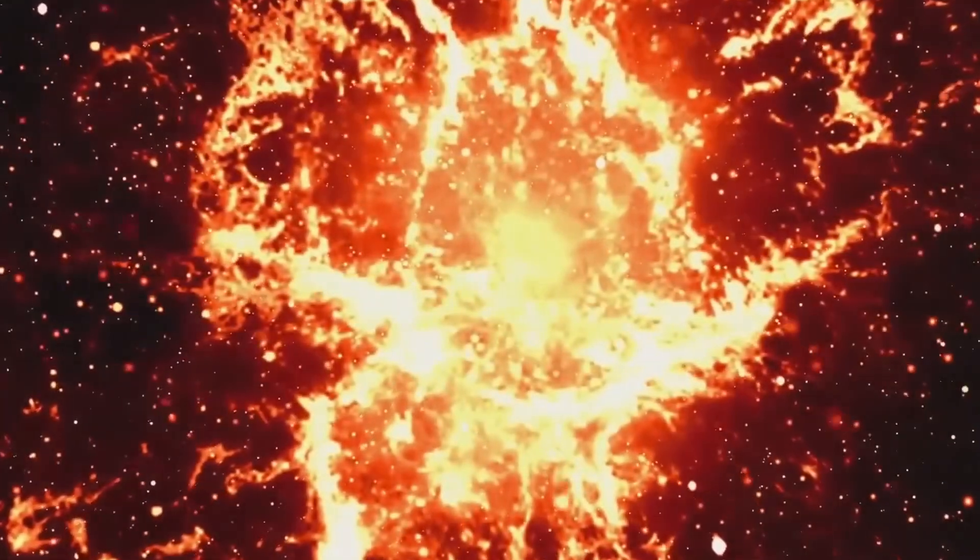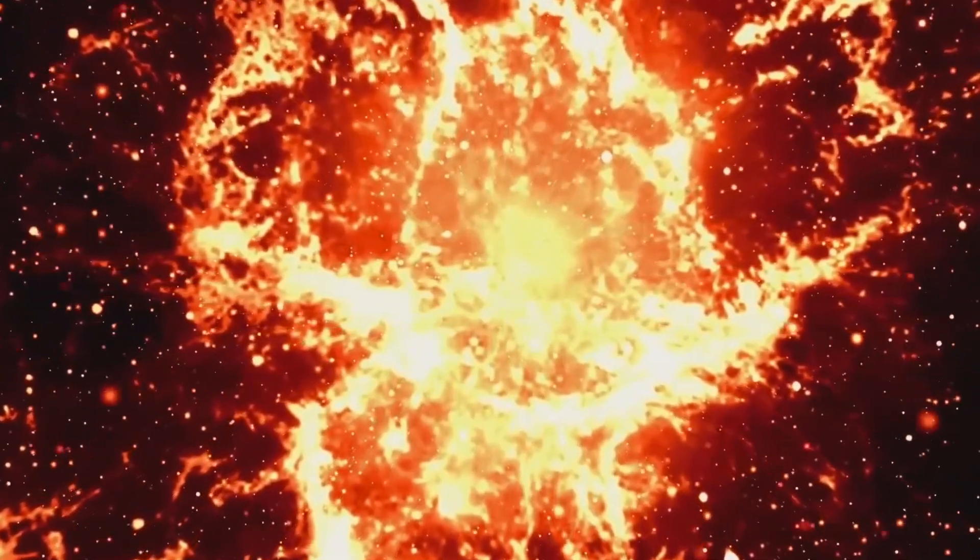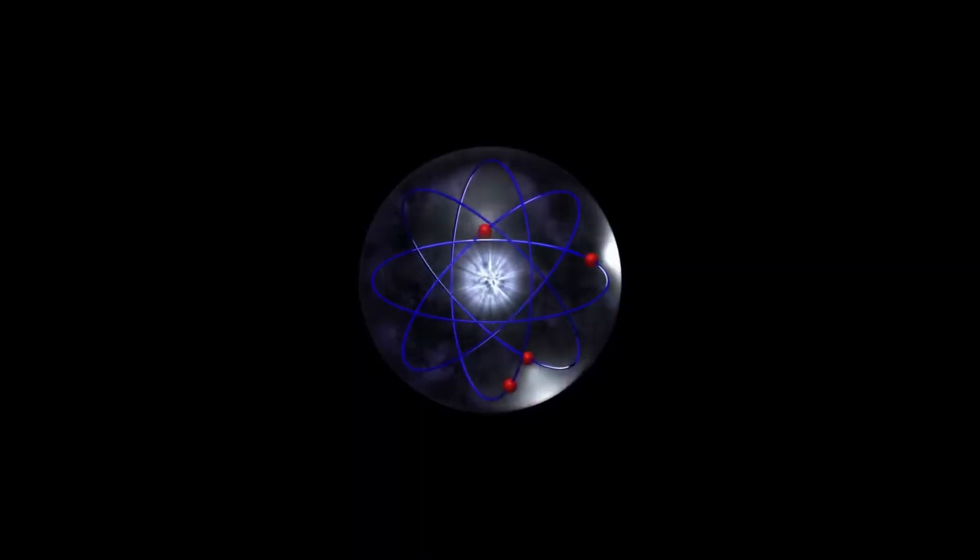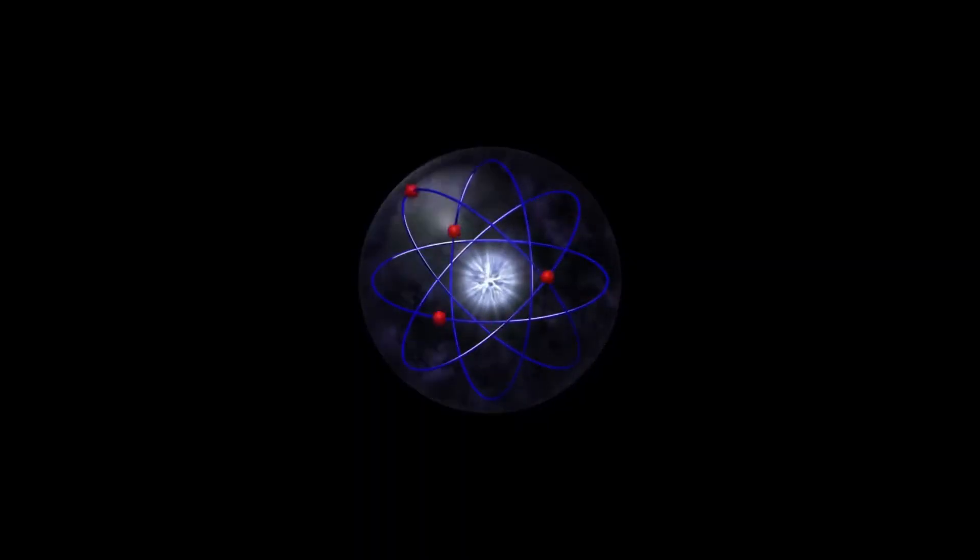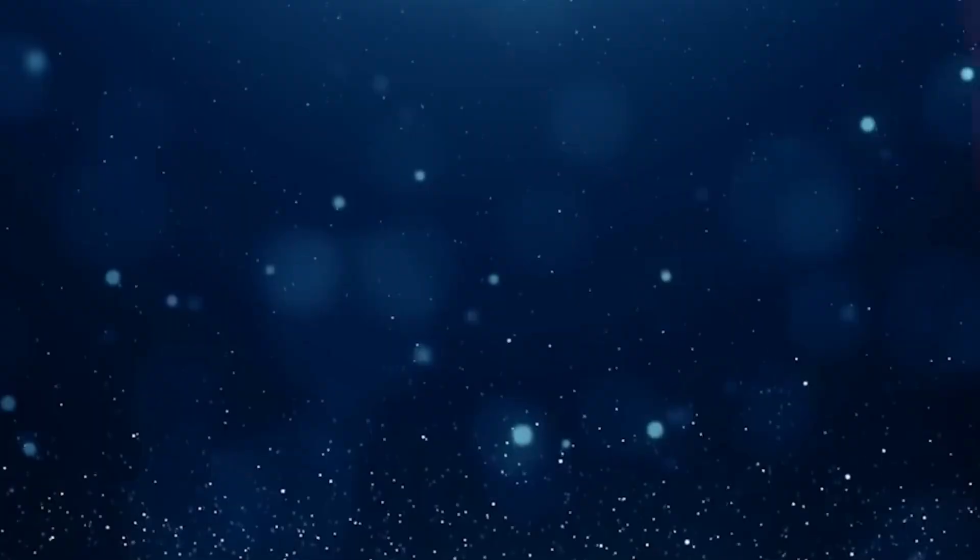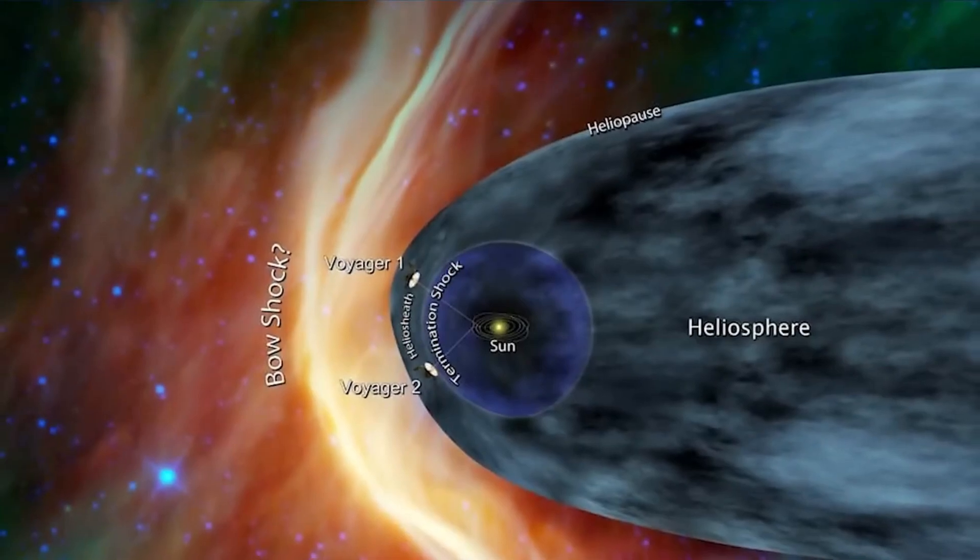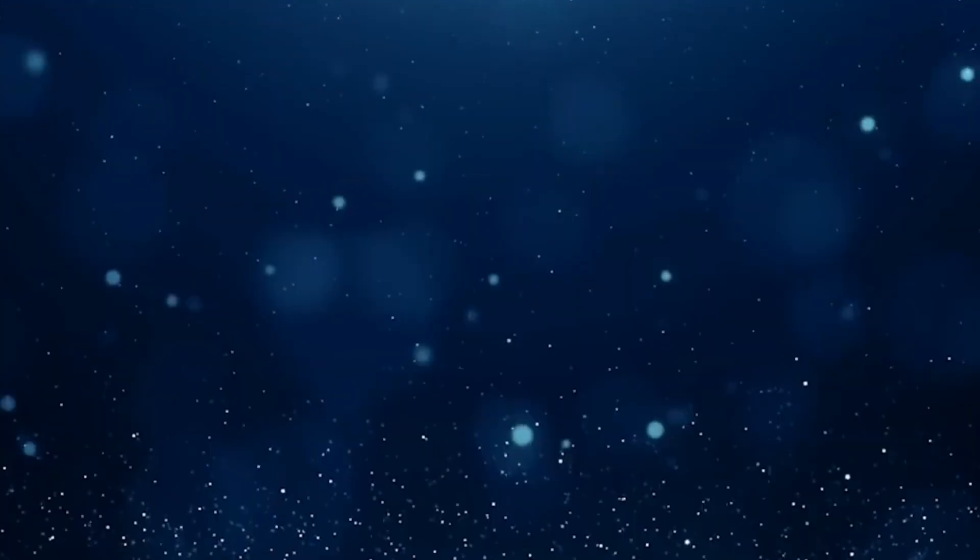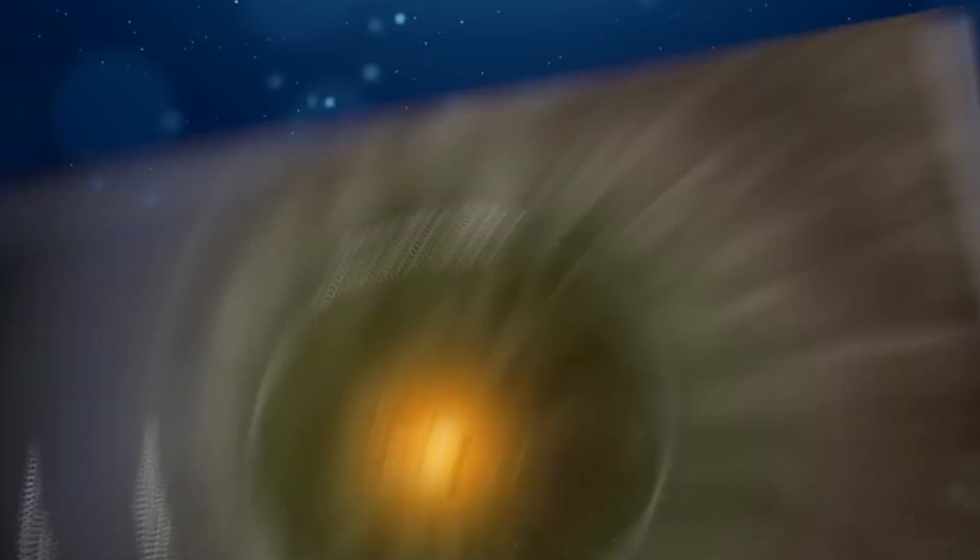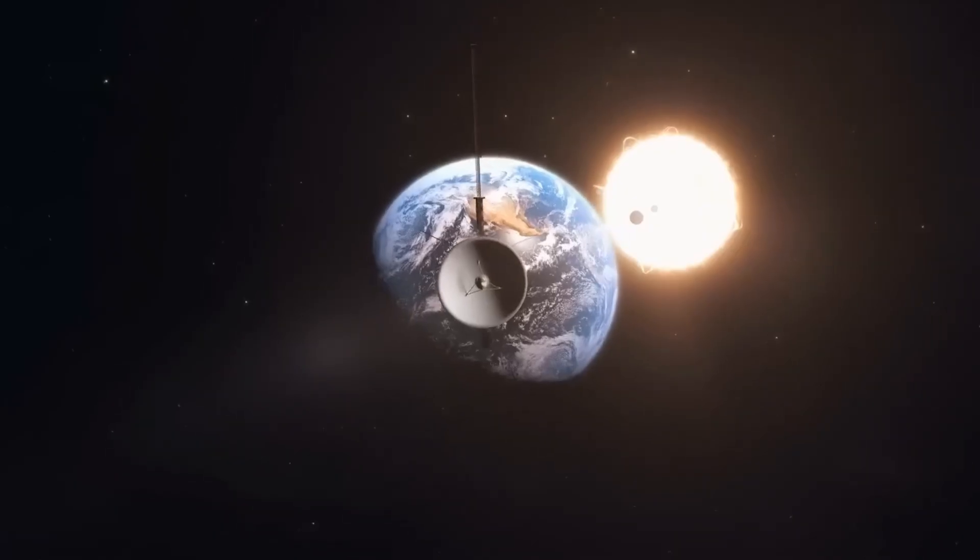Voyager 2, however, provided a breakthrough in 2018. With its plasma instrument fully functional, scientists gained a clearer view of the heliopause. They observed that as the spacecraft approached the boundary, the surrounding plasma slowed, heated up, and became denser, offering an unprecedented look at the dynamics of this crucial interface.